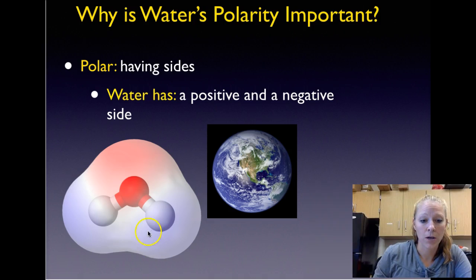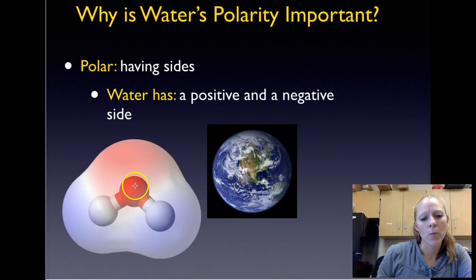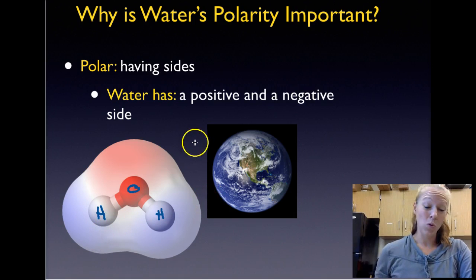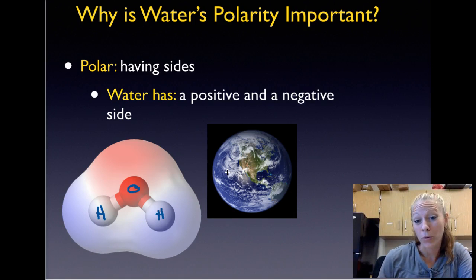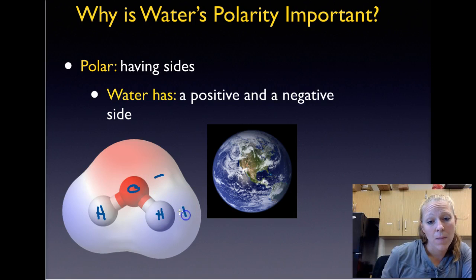You can see on this water molecule that this is going to be the oxygen side and this is the hydrogen side. It has sides. Just like the earth has poles, so it's polar. We have a north pole and a south pole. This molecule here has sides, and it has a negative side and a positive side.